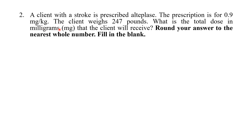The client weighs 247 pounds, but the weight is given in pounds. The question asks: what is the total dose in milligrams that the client will receive? Round your answer to the nearest whole number and fill in the blank. For this type of question, the prescribed dose is 0.9 mg per kg, so we need to calculate in kilograms, but the client's weight is in pounds, so we need to convert.